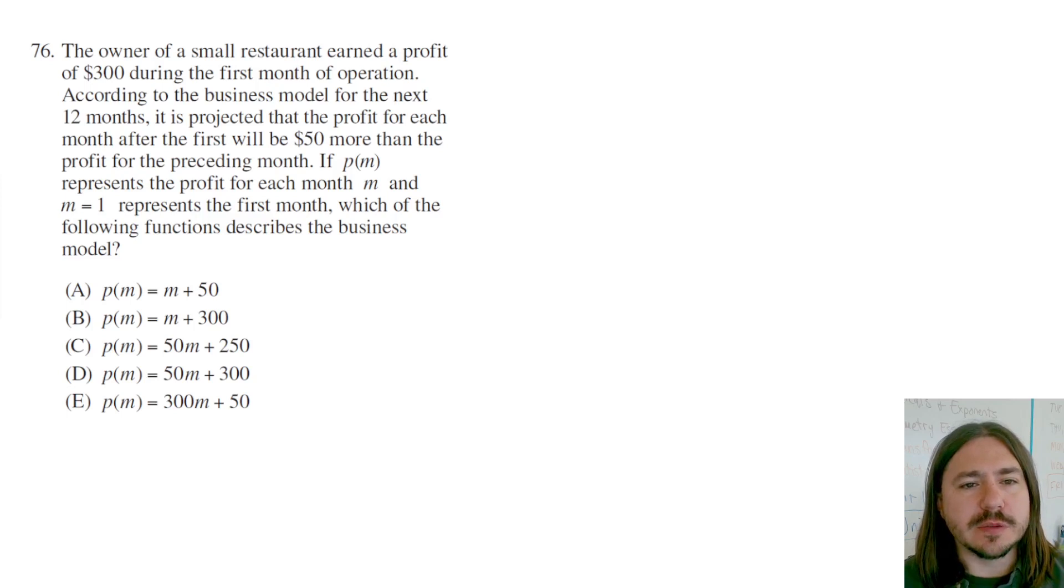According to the business model for the next 12 months, it is projected that the profit for each month after the first will be $50 more than the profit for the preceding month. If P of M represents the profit for each month, where M equals 1 represents the first month, which of the following functions best describes the business model?